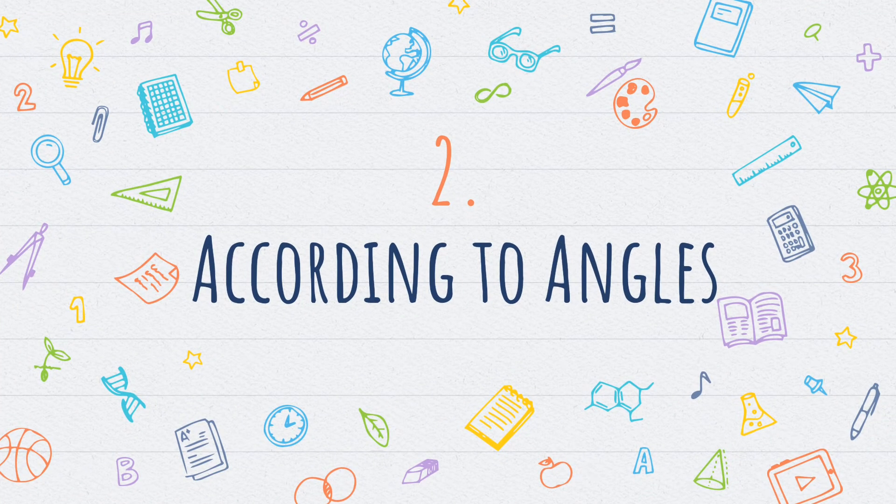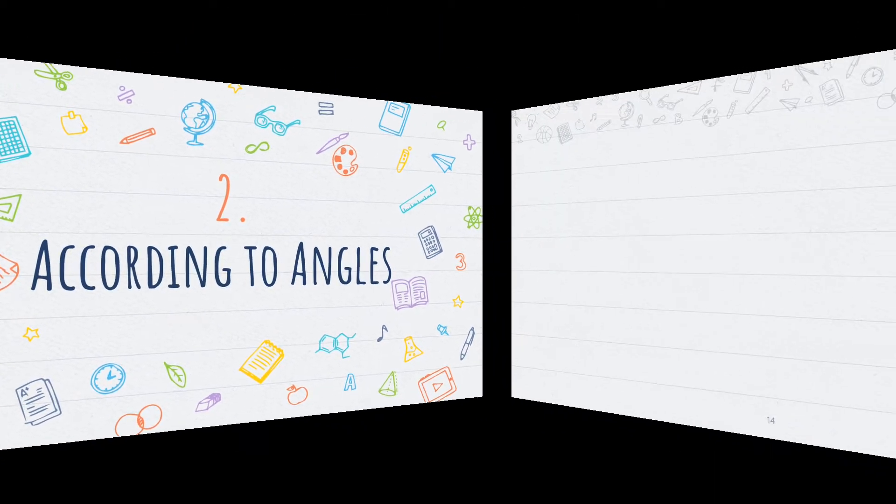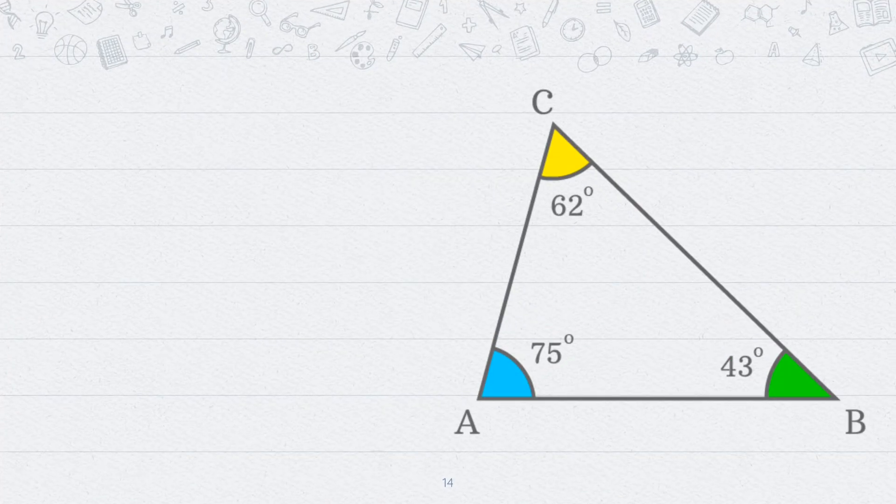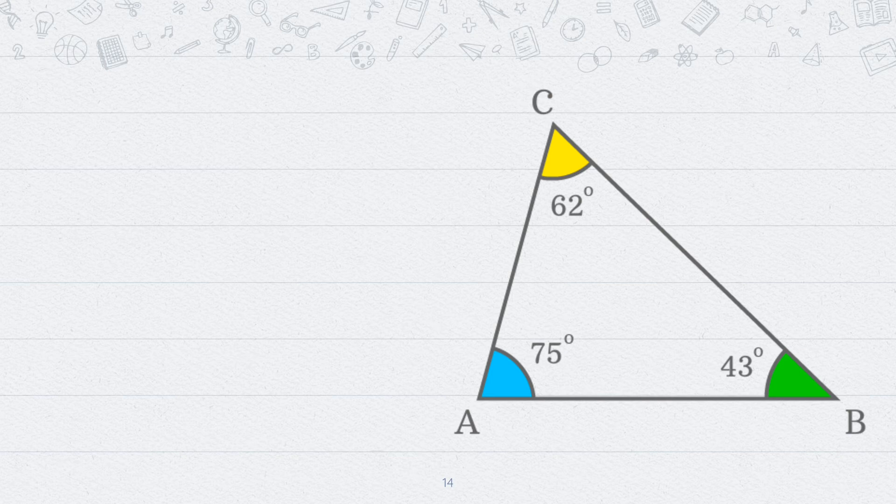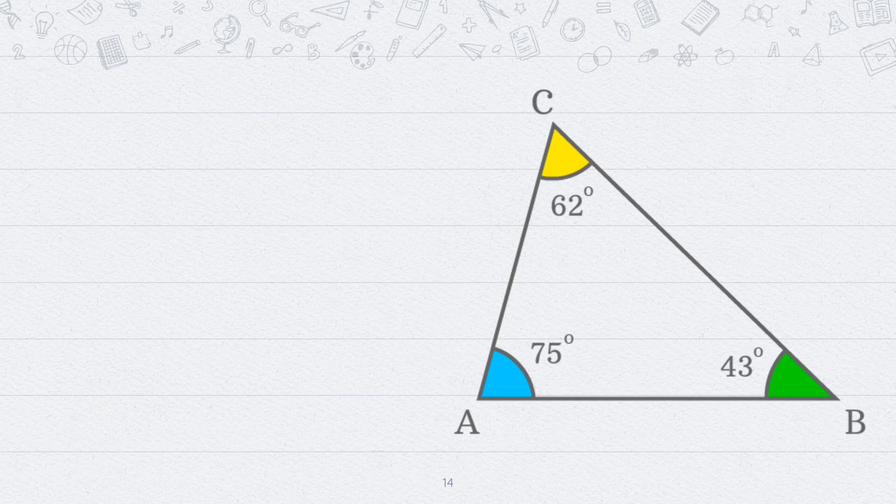Number two, according to angles. Now look at this triangle. This triangle has three angles like all the other triangles. The measurement of angle A is 75 degrees. The measurement of angle B is 43 degrees. The measurement of angle C is 62 degrees. All of these angles are smaller than 90 degrees. And angles that are smaller than 90 degrees are called acute angles. So, this triangle is an acute angled triangle.